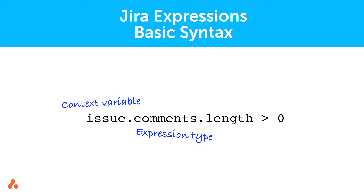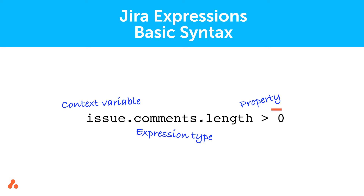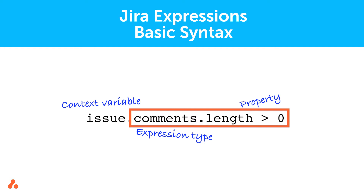Since this query checks that there is at least one or more comments on an issue, the next part of the code focuses on that specific evaluation by specifying what property to check against the field. For this example, length checks the number of comments. The last part of the code is a standard mathematical operator that specifies the number of comments to check. In this case, the expression indicates greater than zero, so the query checks for any number of comments greater than zero.